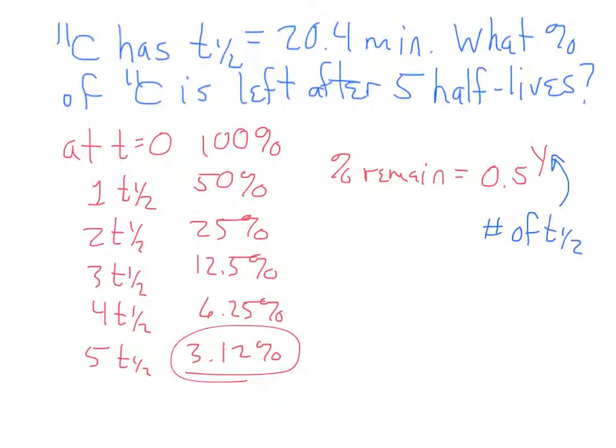If we wanted to say how much would remain after 3.3 half-lives, then that would be 0.5 to the 3.3 power. What would that be when you do that on a calculator? 10.2%. 10.2% remaining. And that makes sense—it's somewhere between 12.5% and 6.25%.